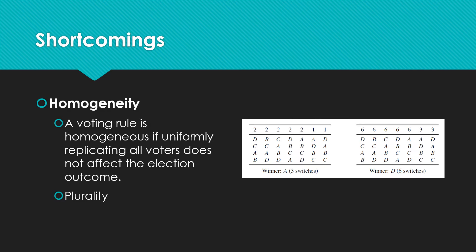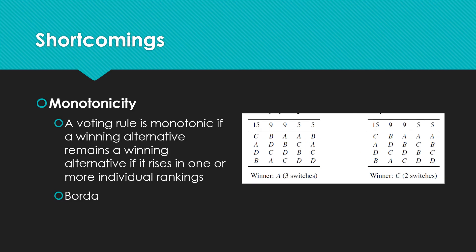Another critique is monotonicity. A voting rule is monotonic if a winning alternative remains a winning alternative if it rises in one or more individual rankings, such as Borda rules. Dorses' rule satisfies monotonicity only when there are no more than three alternatives.